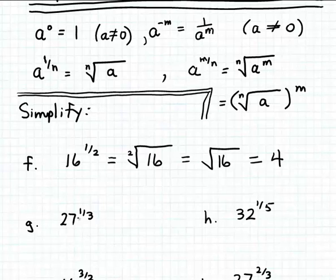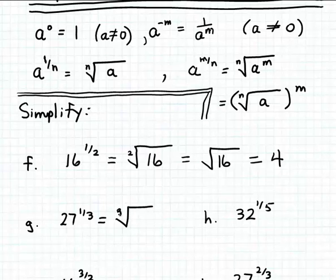Suppose we want to simplify 27 to the 1/3 power. Applying our first rule for fractional exponents, 27 to the 1/3 power is just another way of expressing the cube root of 27. Since 3 cubed is 27, we can extract the cube root of 27, and that gives us 3.